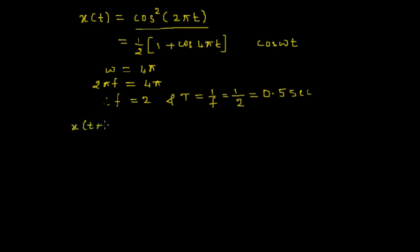Now the task is to determine whether this signal is periodic or not. For that we'll consider the condition x(t + T) = x(t). We already know x(t), so we'll now consider x(t + T), where T = 0.5 in our case, so we'll consider x(t + 0.5).